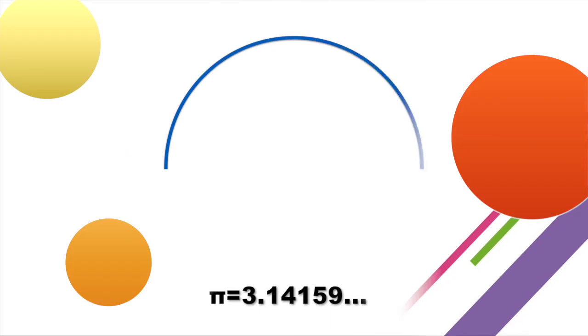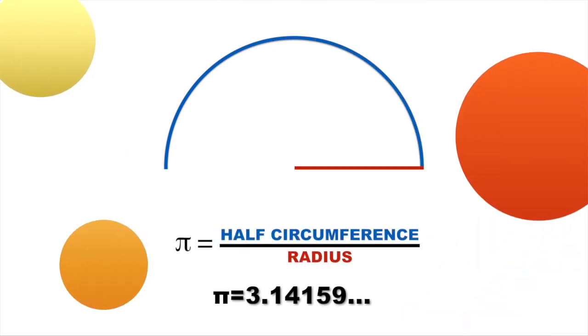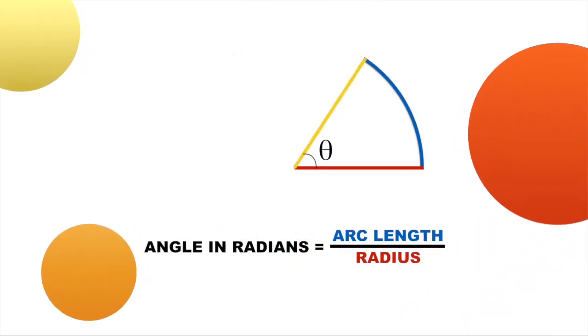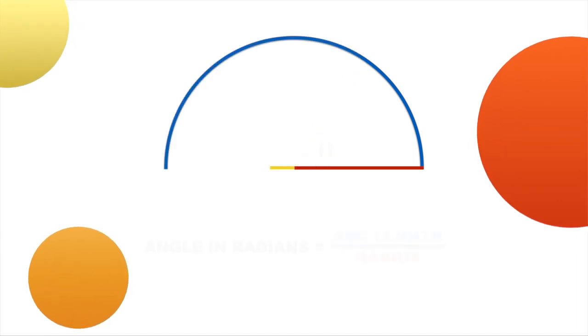Next up is pi, the ratio between half a circle's circumference and its radius. It's also used to measure angles in radians, where the angle equals the ratio between the arc length and the radius.